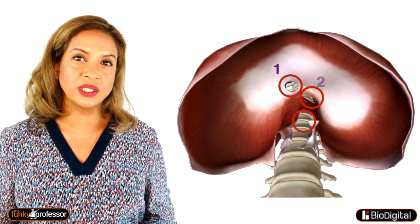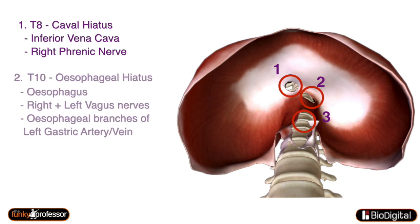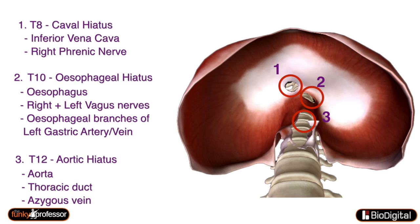The three openings in the diaphragm are: firstly, the caval hiatus at the level of T8, which transmits the inferior vena cava and the terminal branches of the right phrenic nerve. The oesophageal hiatus at the level of T10 transmits the oesophagus, the right and left vagus nerves, and the oesophageal branches of the left gastric artery and left gastric vein. The final opening is the aortic hiatus at the level of T12, which transmits the aorta, the thoracic duct, and the azygous vein.